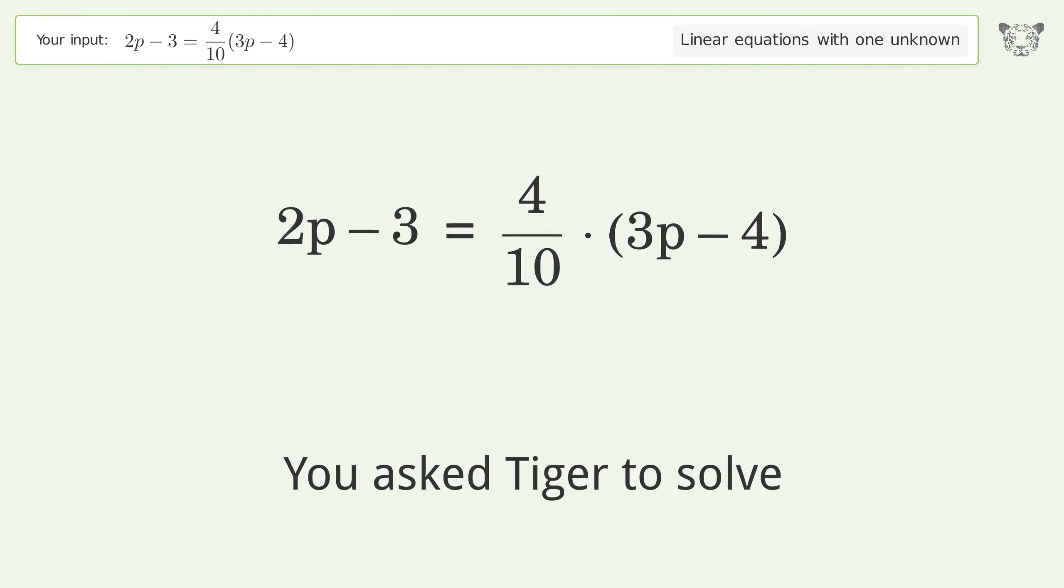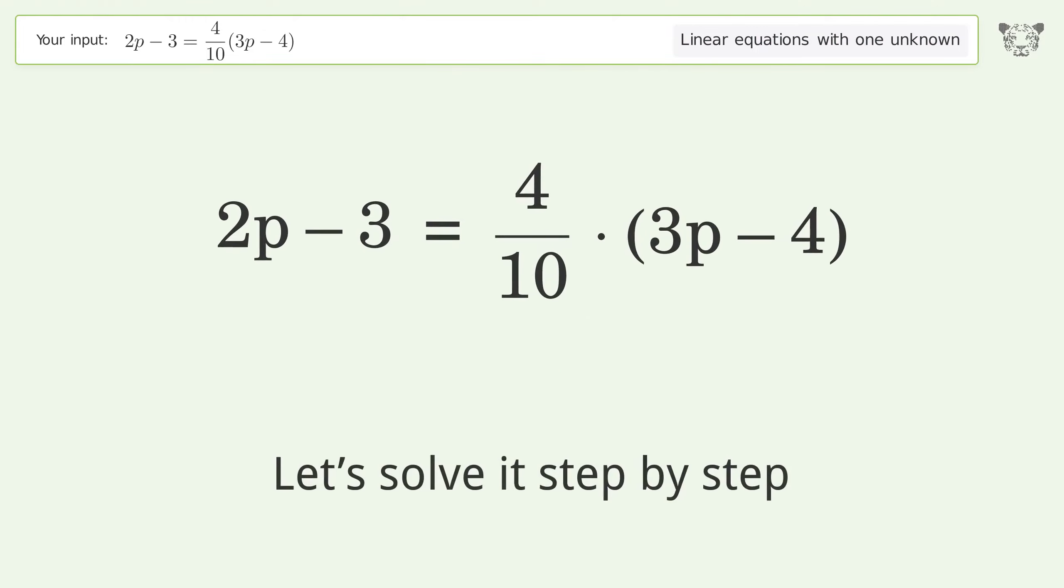You ask Tiger to solve this, which deals with linear equations with one unknown. The final result is p equals 7 over 4. Let's solve it step by step. Simplify the expression.